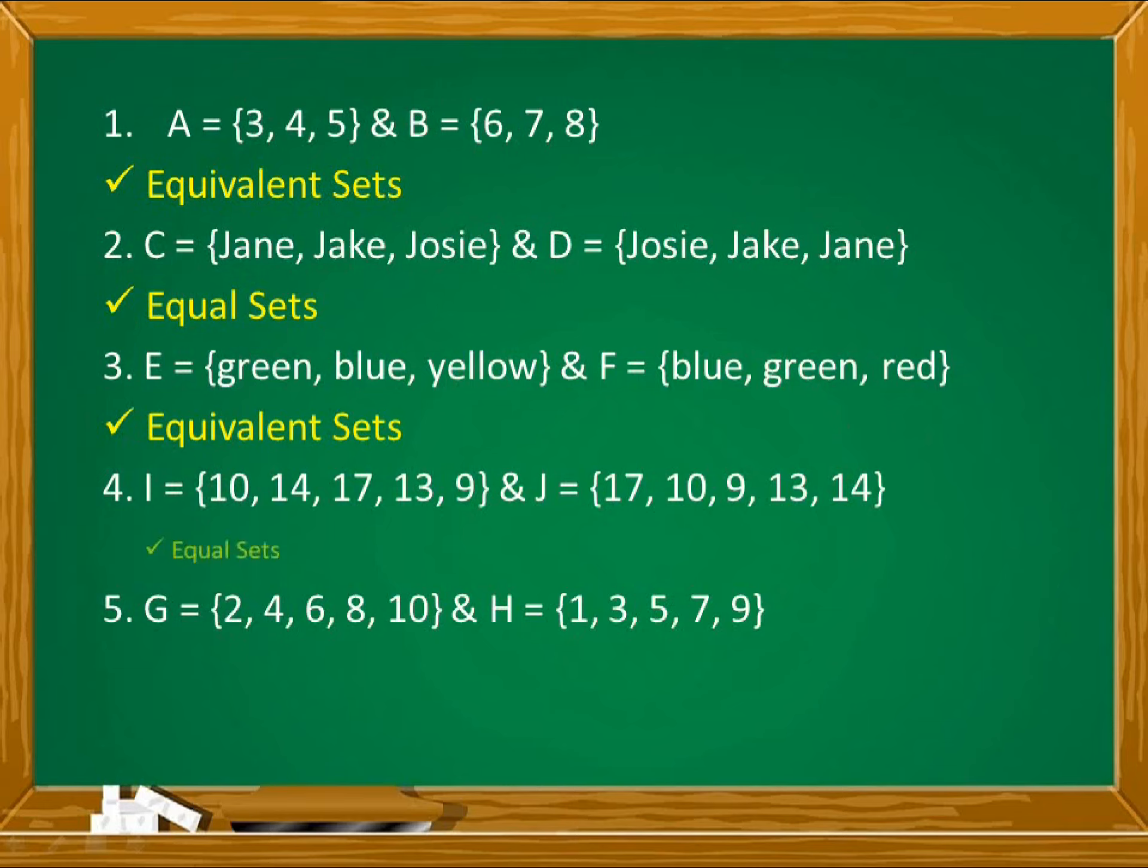Number 4, set I and J are equal sets. Same cardinality and same elements. And number 5, set G and set H are also equivalent sets. Same cardinality but not the same elements. For the last part,